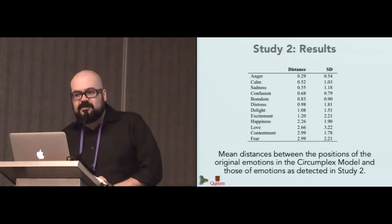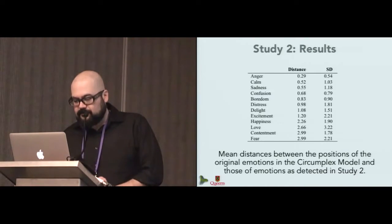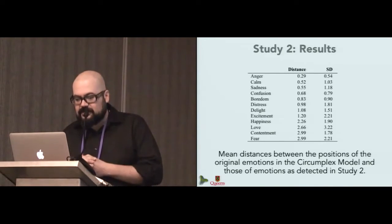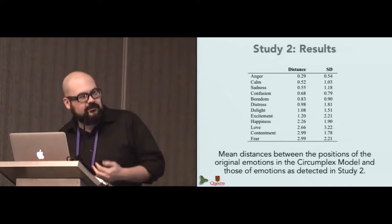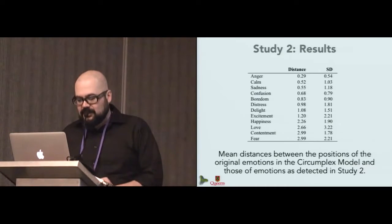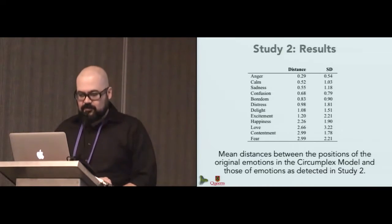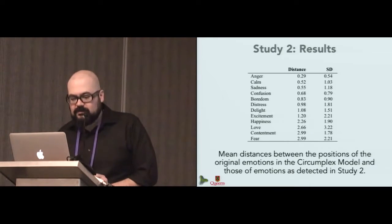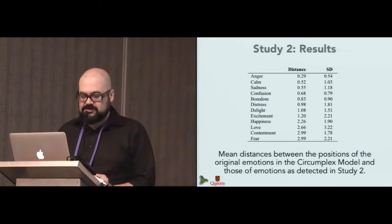This is a table showing the mean distances, so we can tell it's the same information, but in a table format. So mean distances for every emotion, and the standard deviation as well for each of them.